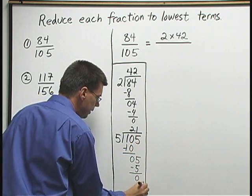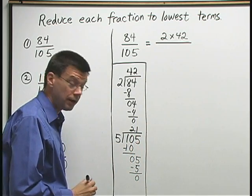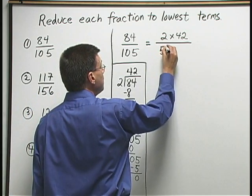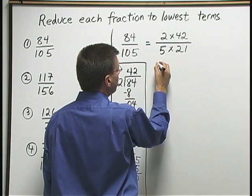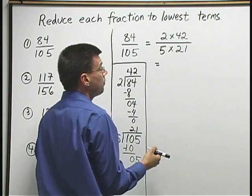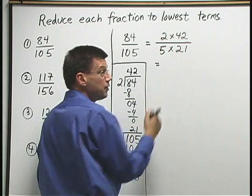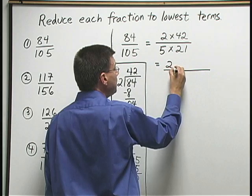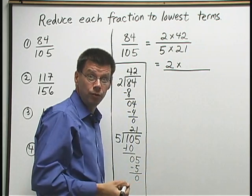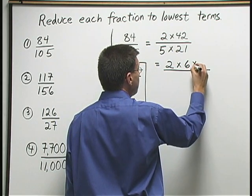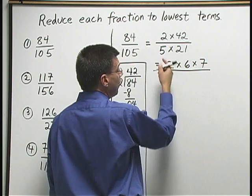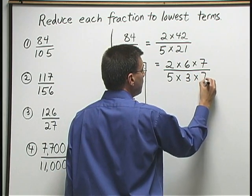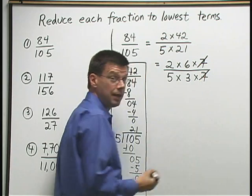So here I see that 5 goes into 105 twenty-one times with no remainder. So 5 times 21 has to equal 105. We got that broken down as 5 times 21. Now let's keep going breaking down the numbers above and below. I have 2. I recopy since it's prime. Times 42 that I know is 6 times 7. Down below, 5 is prime times 21. 21 I can write as 3 times 7. And now I see I have a 7 that I can cancel above and below.